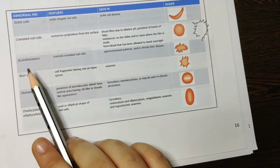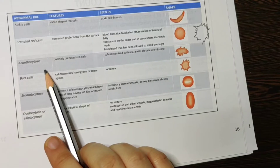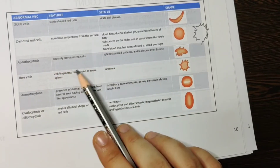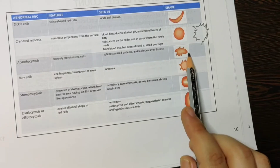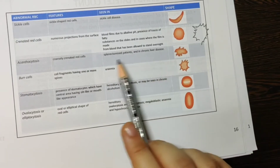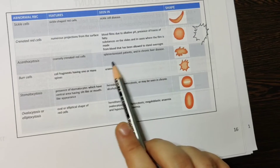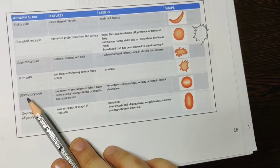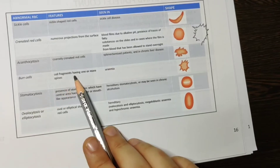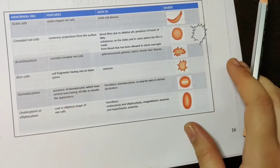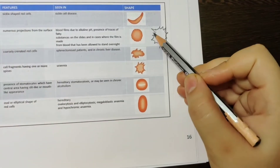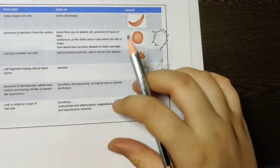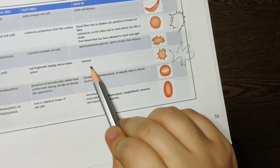Another one is acanthocytosis. Acanthocytosis is also a crenated red cell — there are cell projections you can see. These projections are seen in splenectomized patients (after splenectomy) and in chronic liver disease. Burr cells means cell fragments having one or more spikes — you have spines, which are bigger projections. Burr cells are seen in uremia.